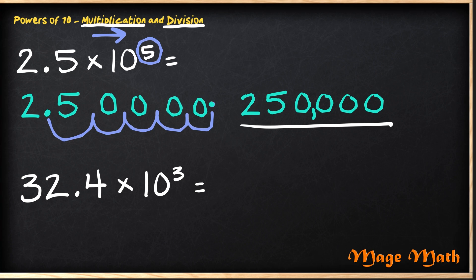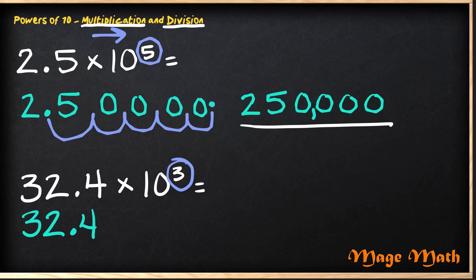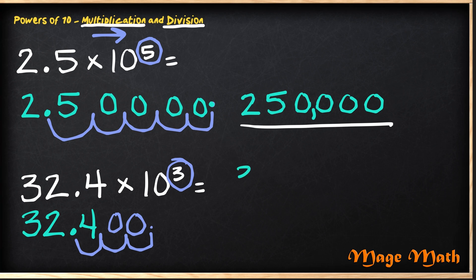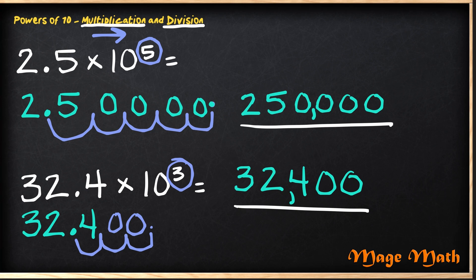Did you work it out? Your first step should have been to take the number thirty-two and four tenths and rewrite it. Then you know you have to look at the power of ten or the exponent — we see our exponent here is three. We're going to move our decimal three places to the right: one, two, three. That means our decimal moved to the end. So if we rewrite the number with zeros, we would write three, two, four, zero, zero. We put in our comma and we now have thirty-two thousand four hundred. Remember, the number gets bigger. Did you get the correct answer?